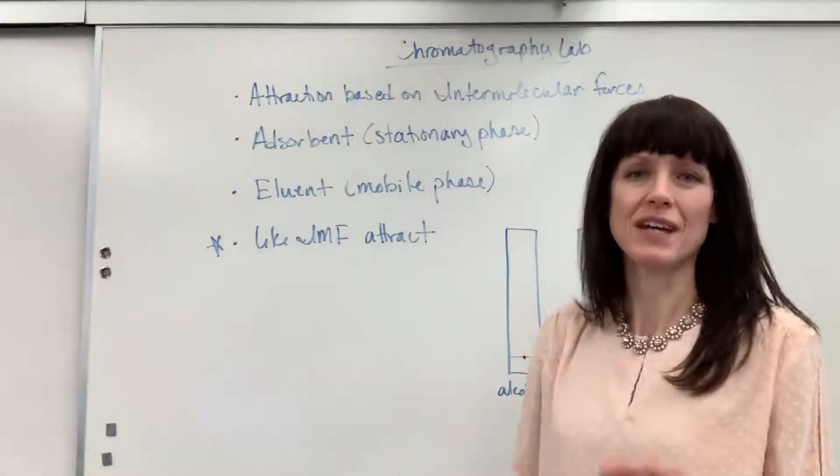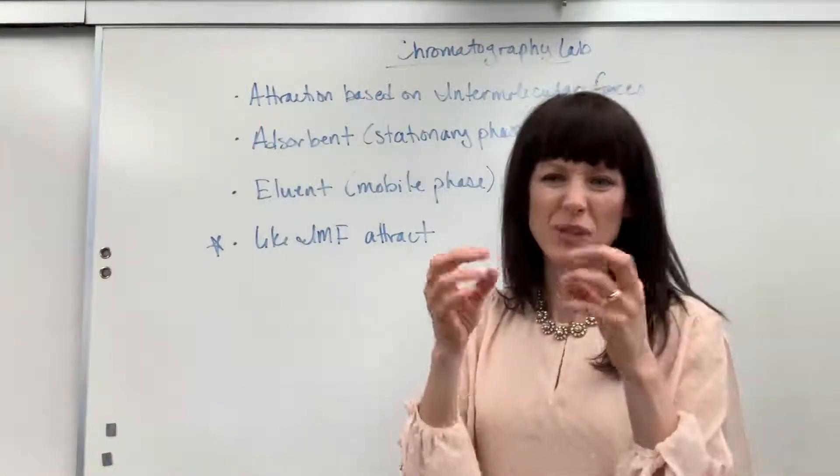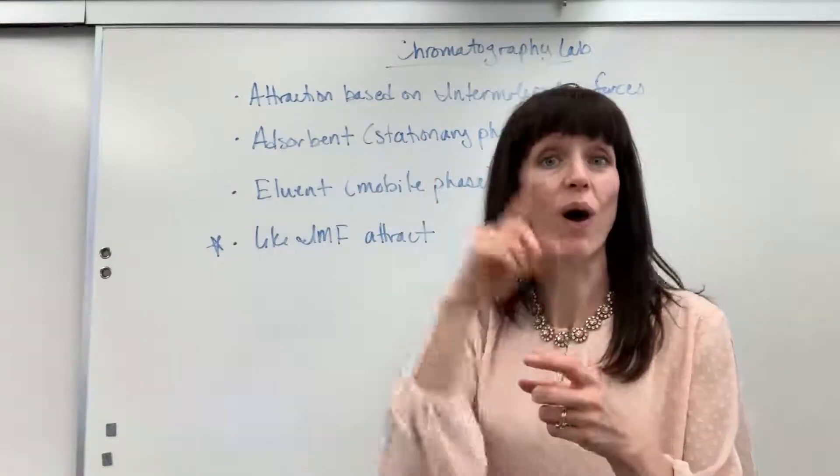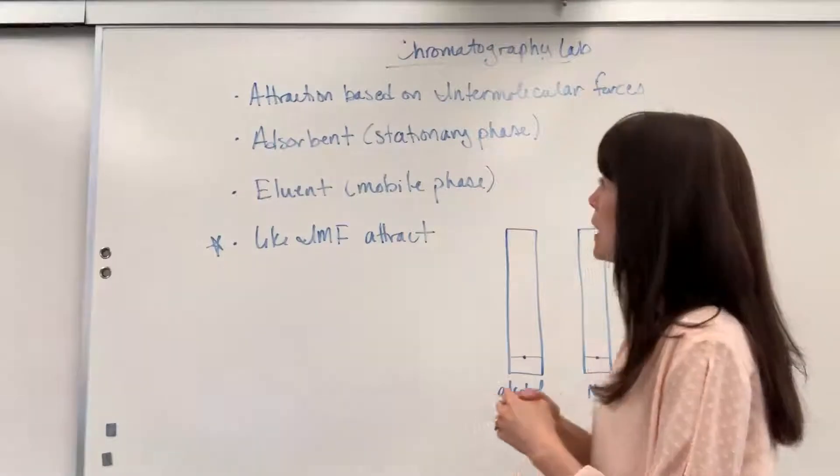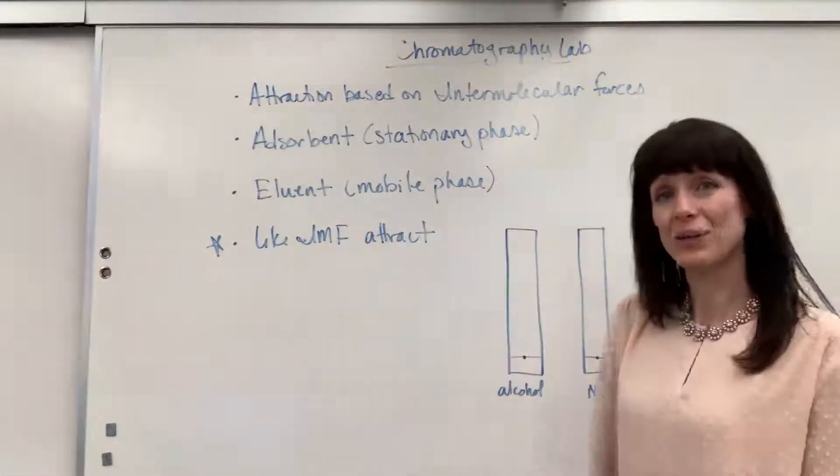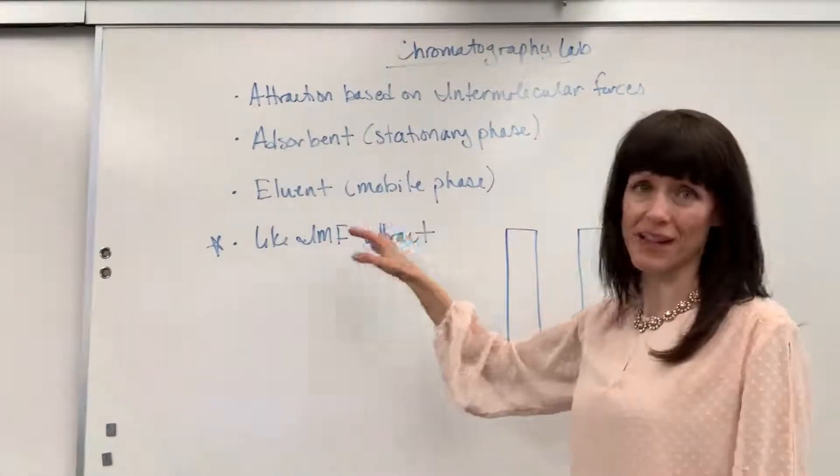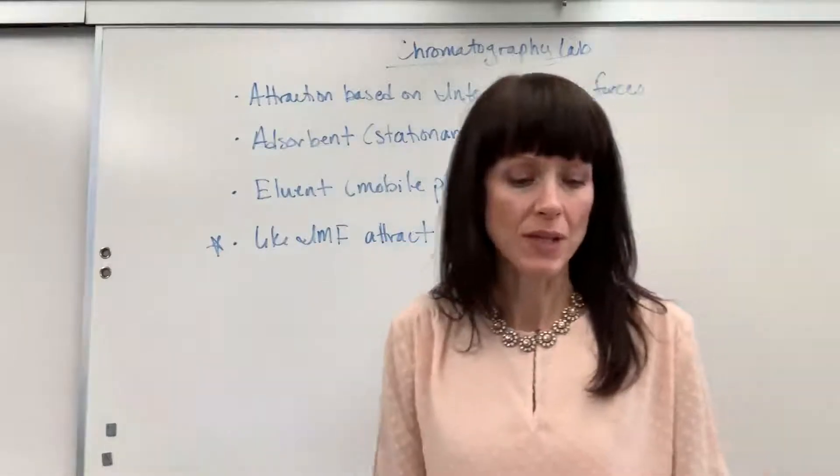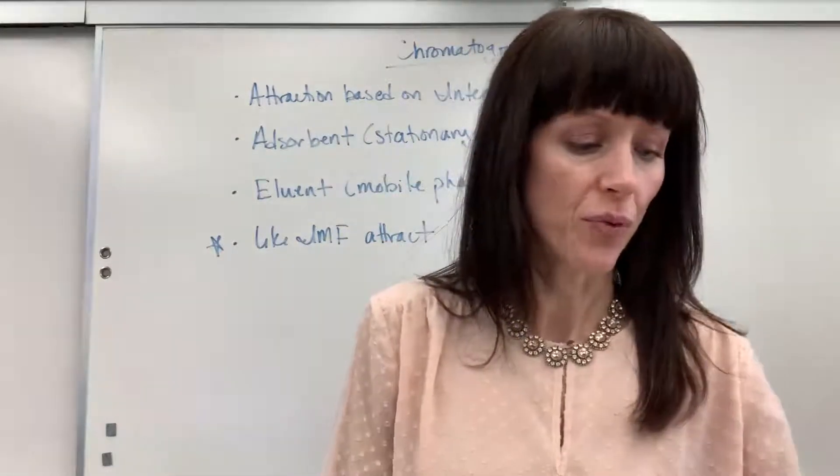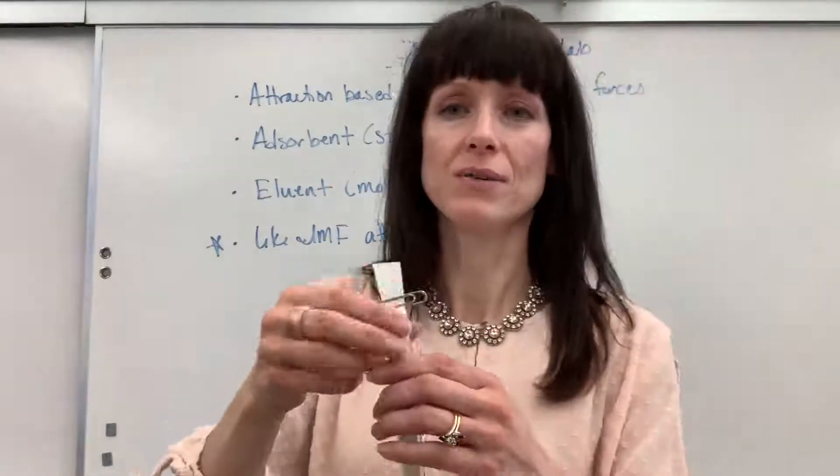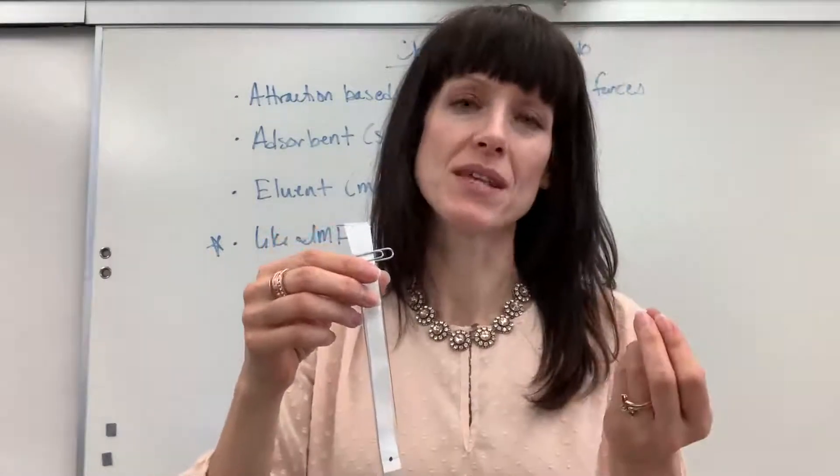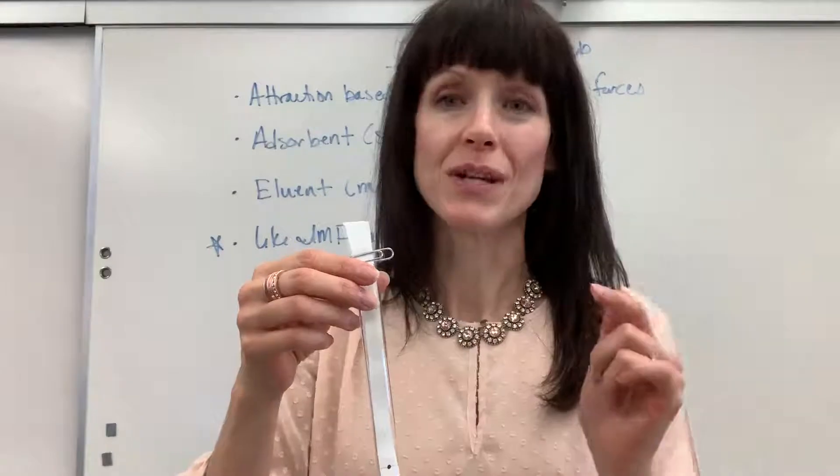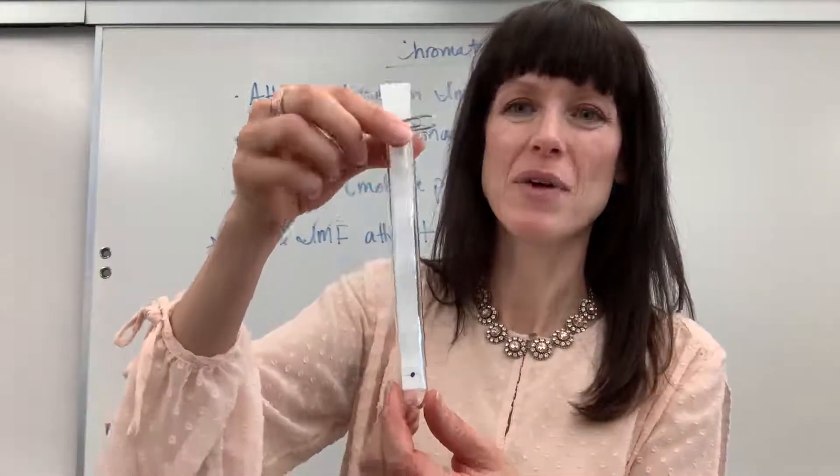If you're doing gas chromatography, it's going to be this gooey sticky substance that's inside of a column, just a tube that's coated with a sticky substance. And then you have the eluent and that is the mobile phase, that's what can move. In this situation, for your lab, you're going to be using isopropyl alcohol 70% and a 20% sodium chloride.